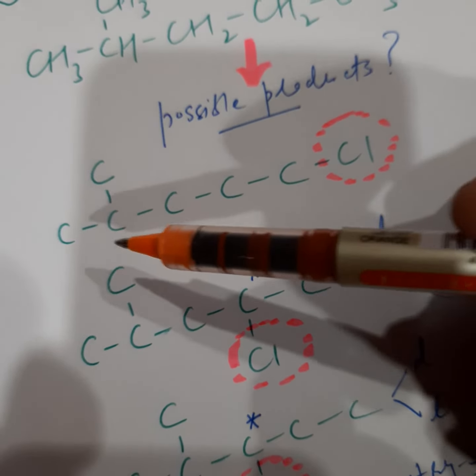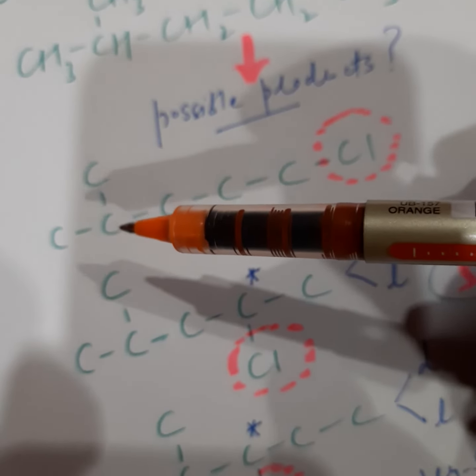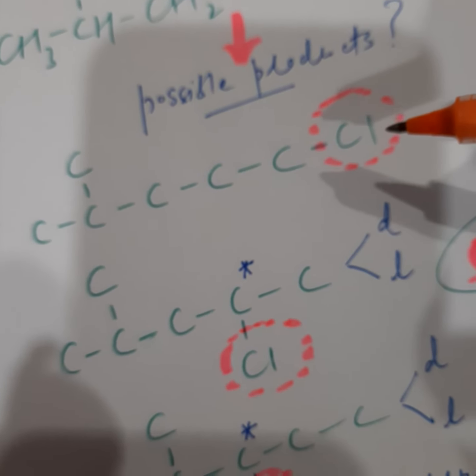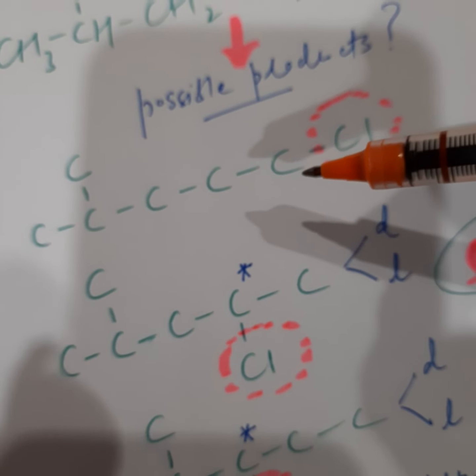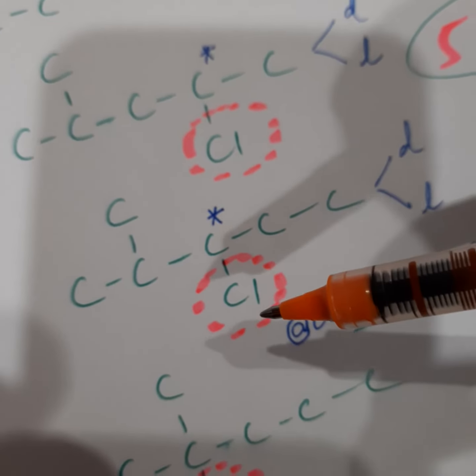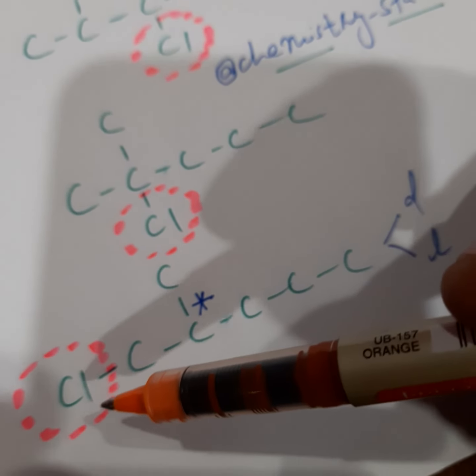Now as you can see I have drawn this structure again, five carbon chain with a methyl group on the second carbon atom. So one of the products will be having chlorine on the first carbon definitely in place of hydrogen atom, then having chlorine on the second carbon atom, having chlorine on the third carbon atom, and having chlorine on the fourth carbon atom, and having chlorine on the fifth carbon atom.